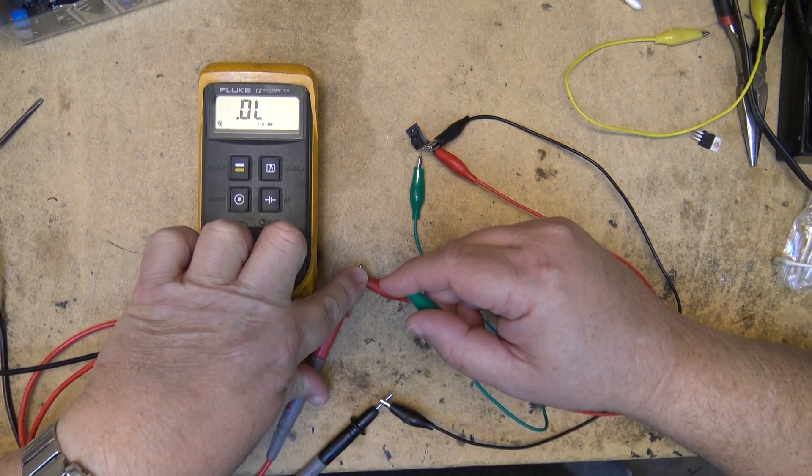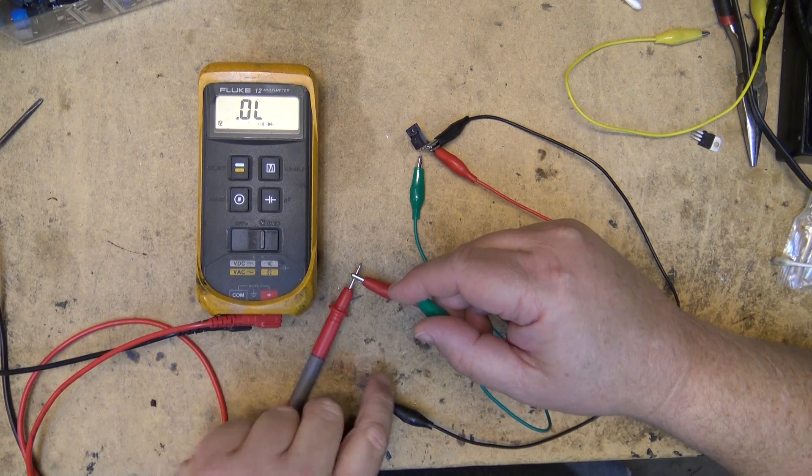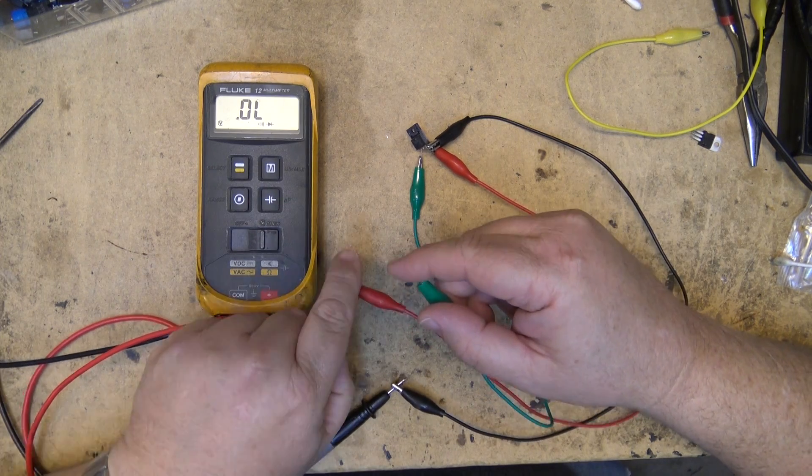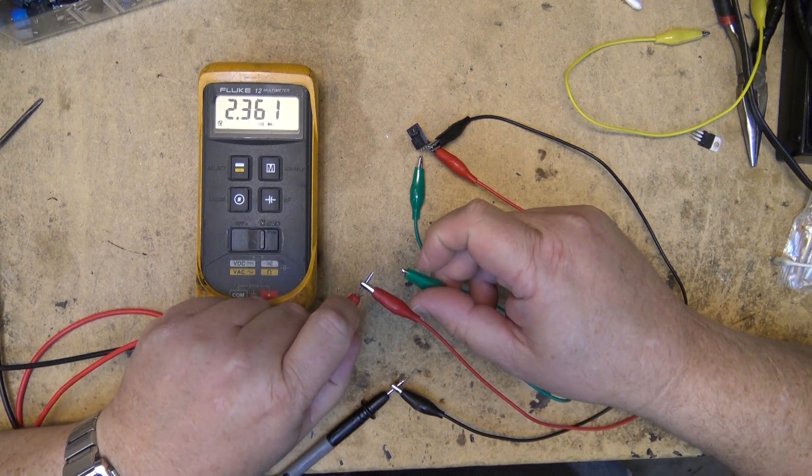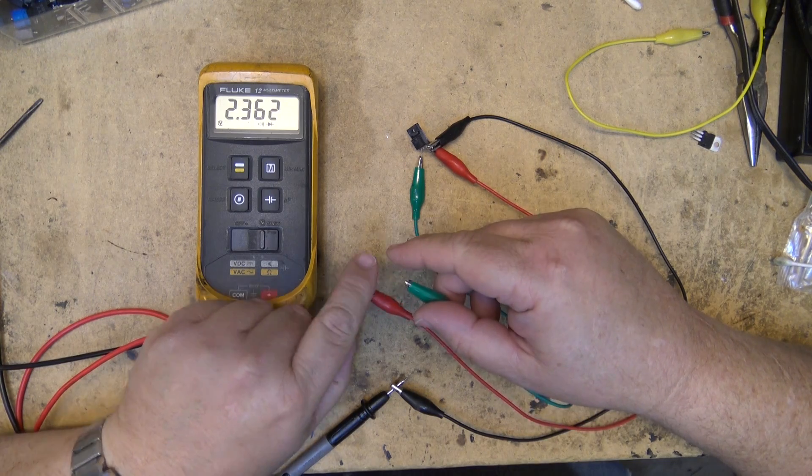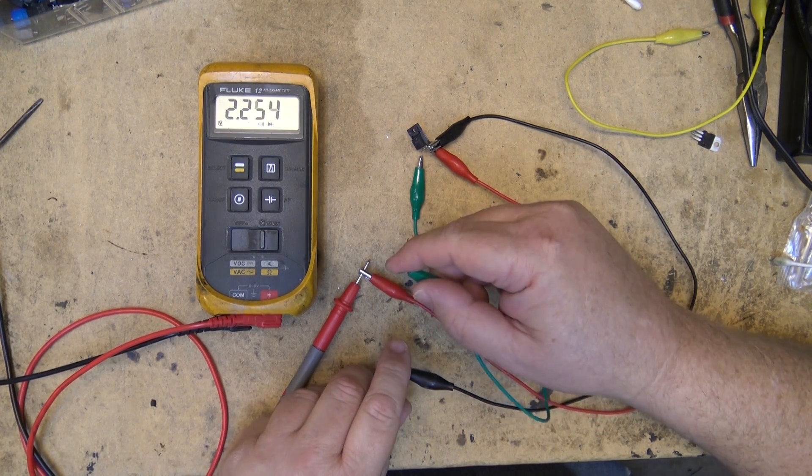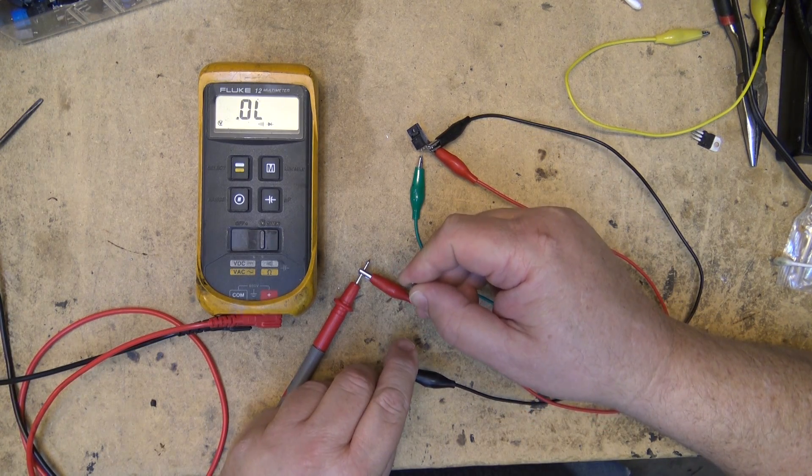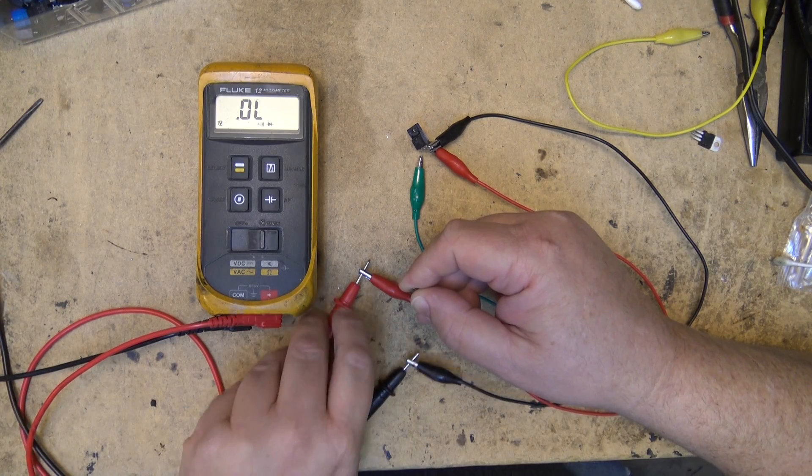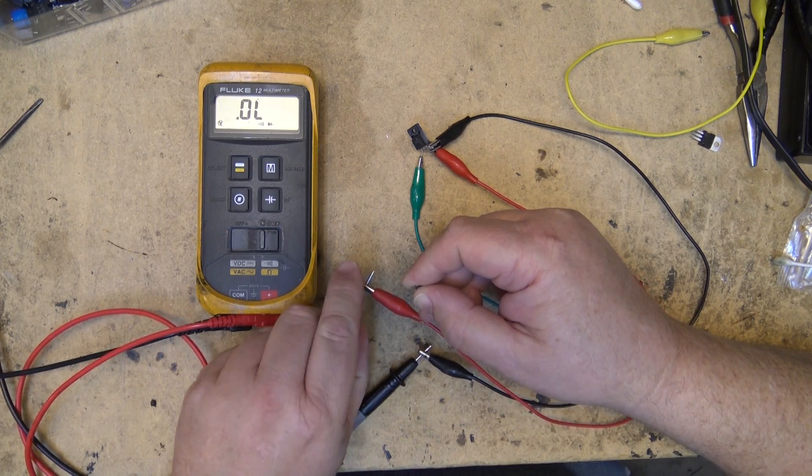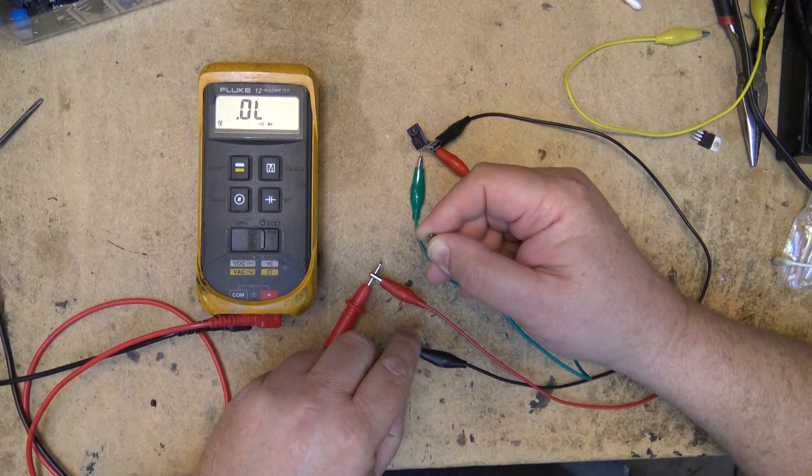Which it just did. And if I do the same, touch my finger on the green and touch it to the negative, I've now just discharged the gate. It's turned off right there. It's on and that's off.